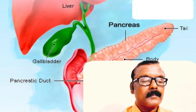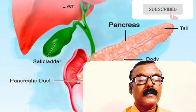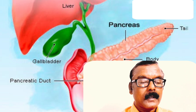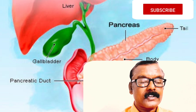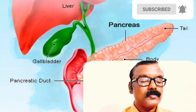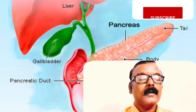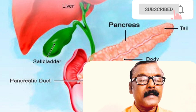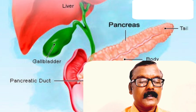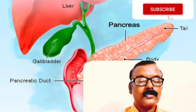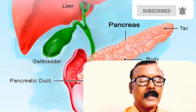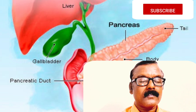The pancreas is a gland organ located in the abdomen. It is a part of the digestive system and produces insulin and other important enzymes and hormones that help break down food. The pancreas has an endocrine function because it releases juice directly into the bloodstream, and it has an exocrine function.